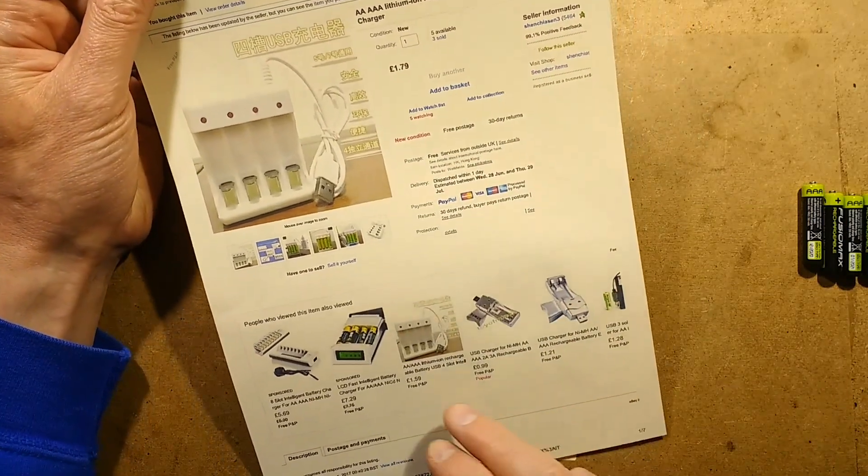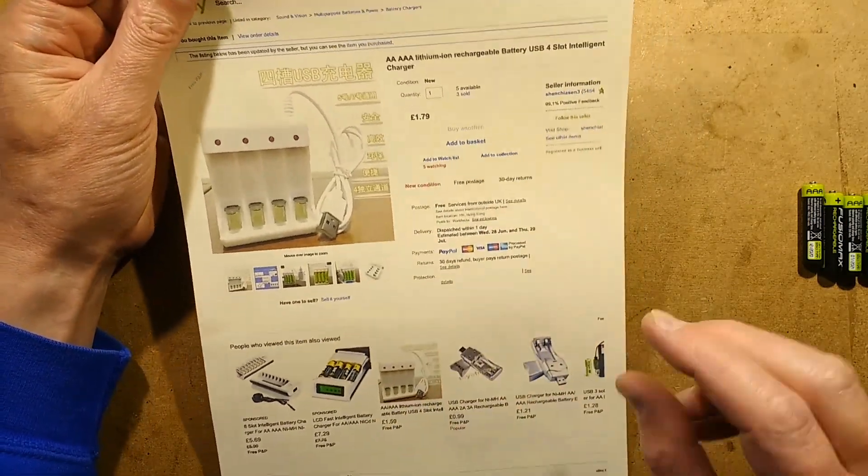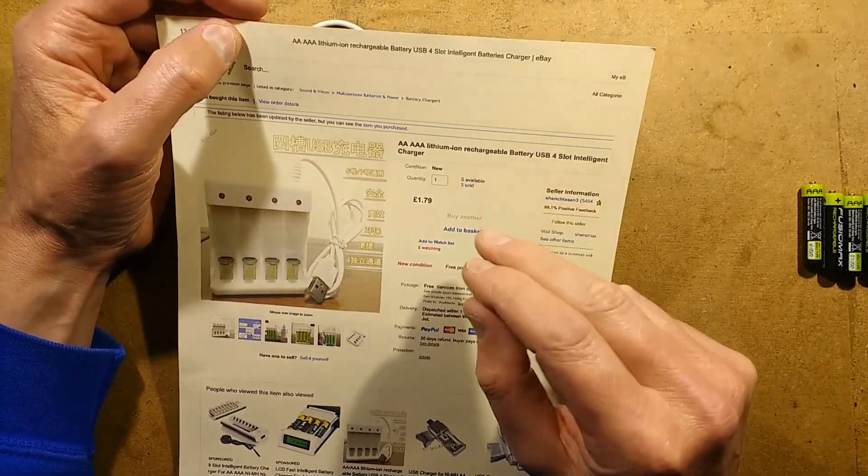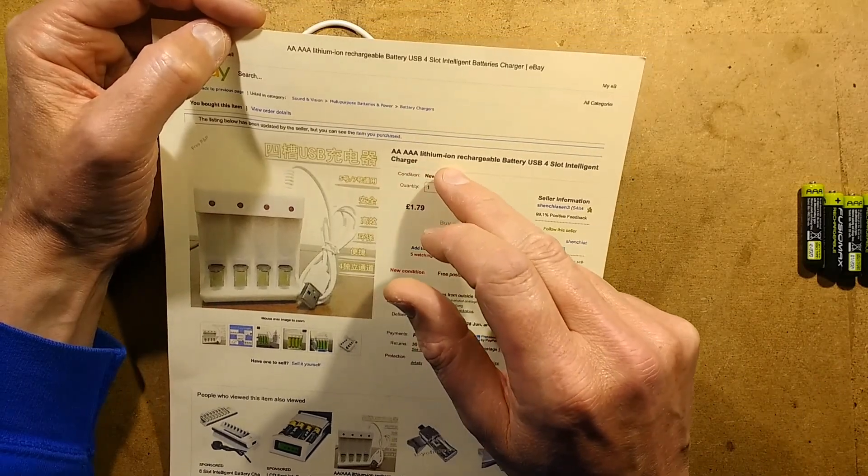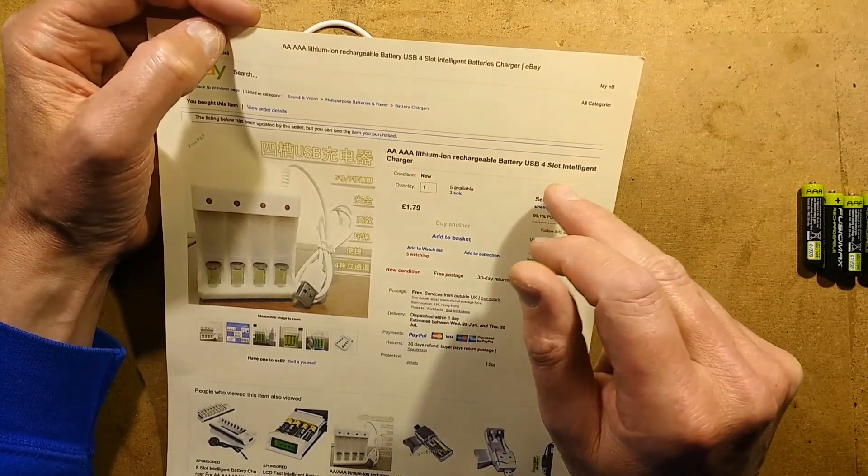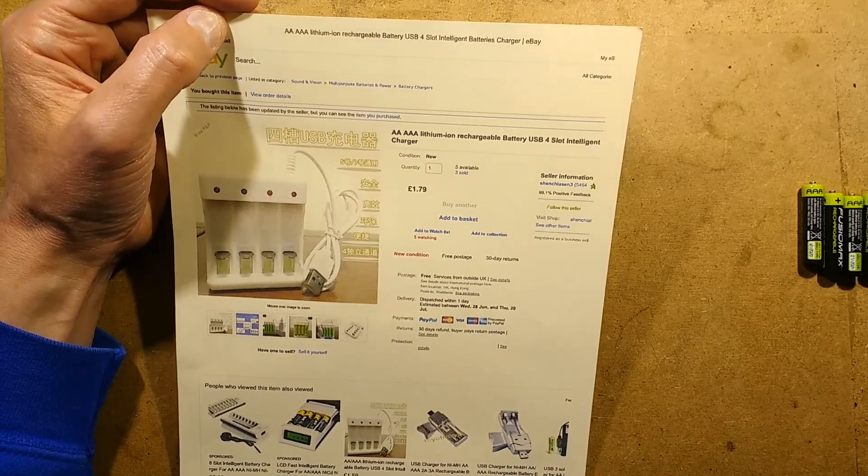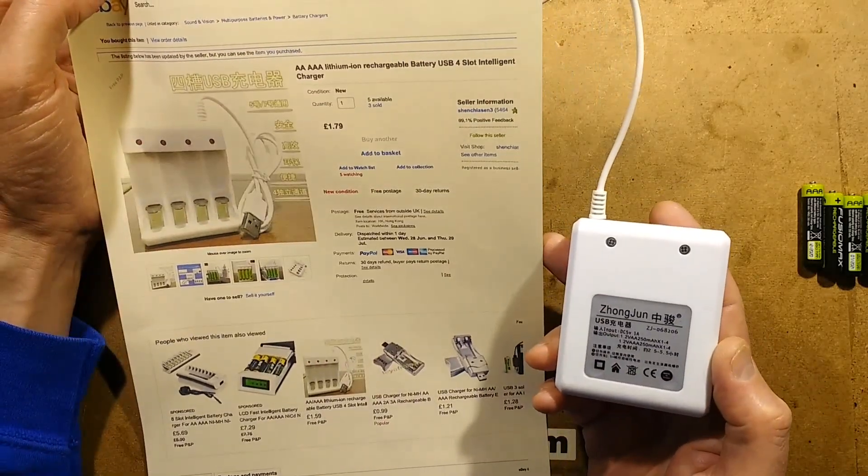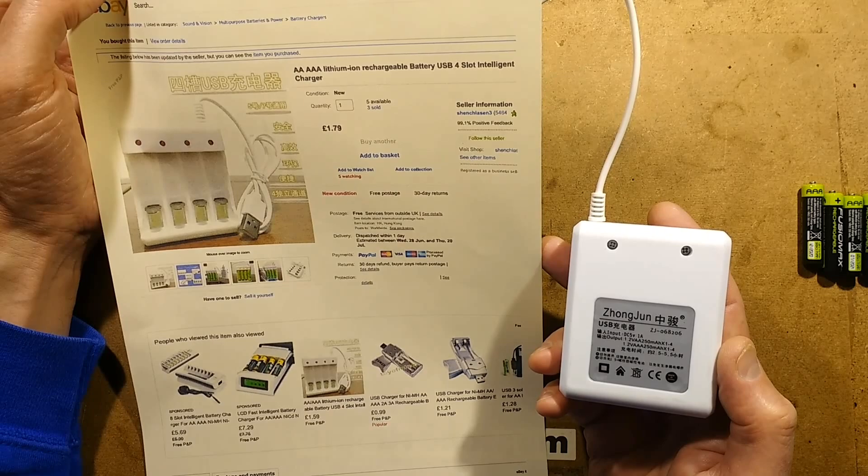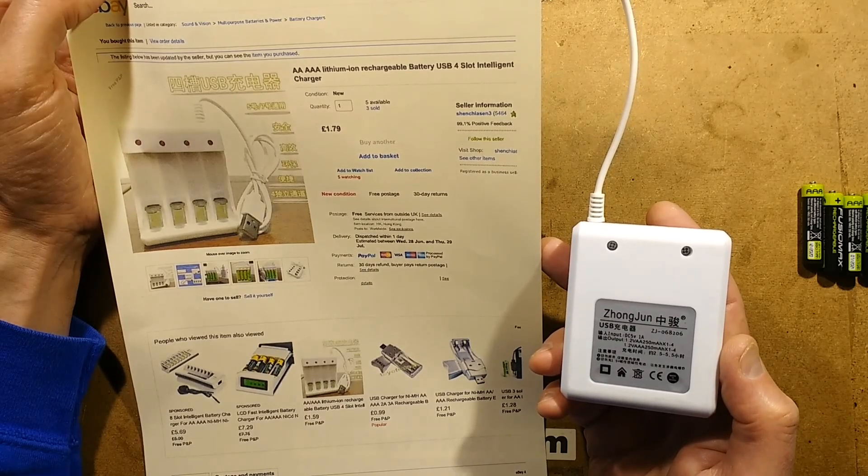It's described rather inappropriately as AAEEE lithium-ion rechargeable battery USB 4 slot intelligent charger. It's not for lithium-ion cells, it's for nickel metal hydride or nickel cadmium cells. In fact on the back it says the output is 1.2 volts at roughly 250 milliamps.